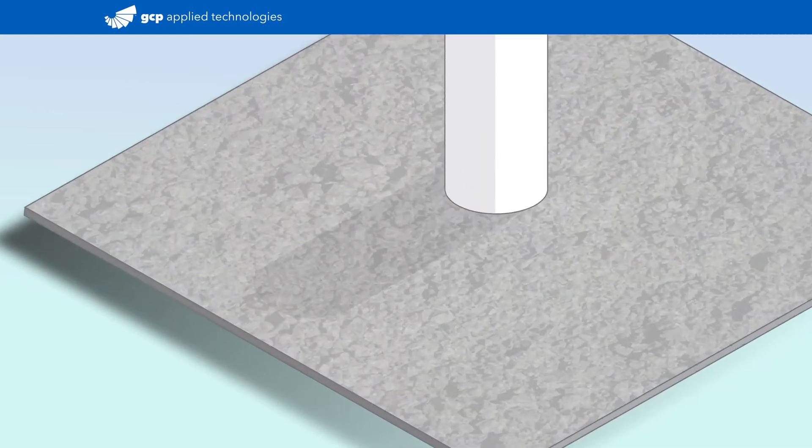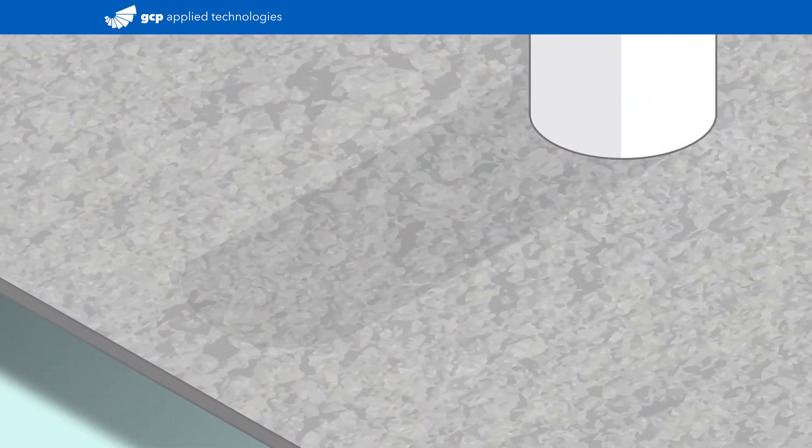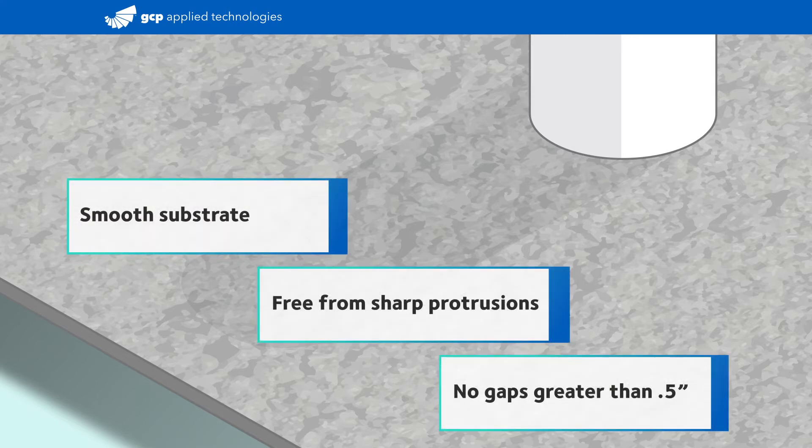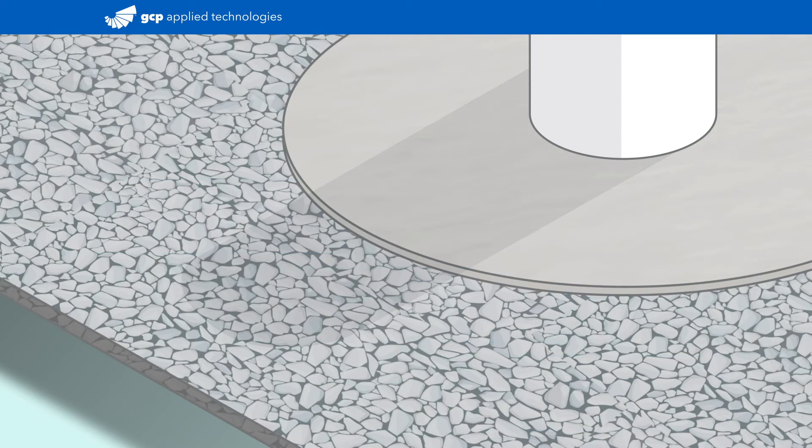Mud slabs should receive at minimum a float finish to achieve a regular and smooth substrate, free of protruding aggregate with no voids greater than half an inch. Earth or stone should be compacted to a level that won't be displaced during installation and concrete placement.